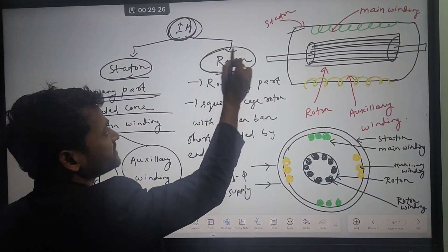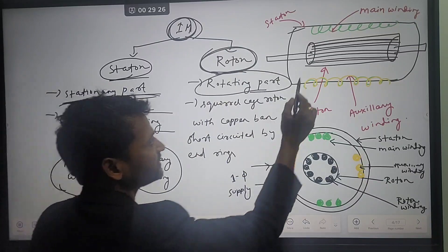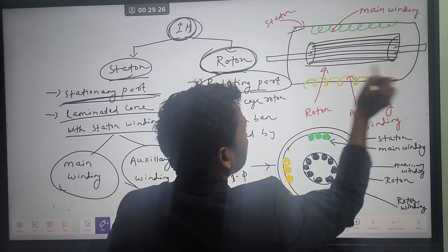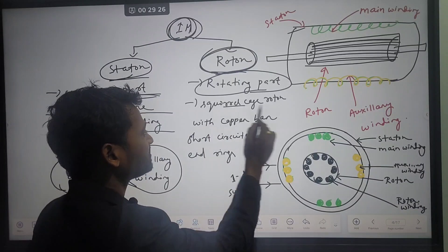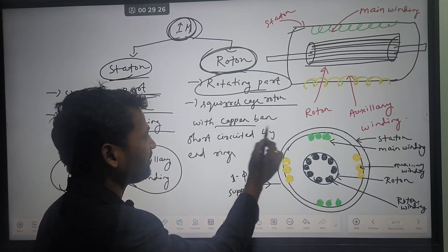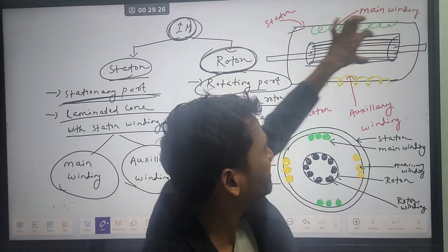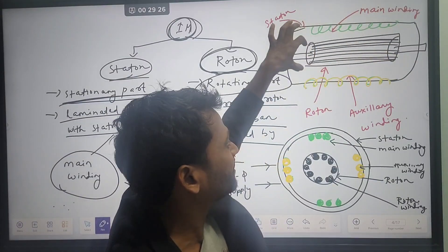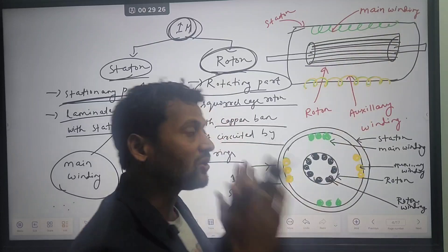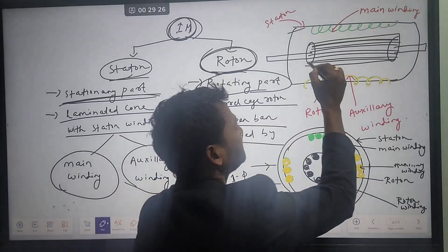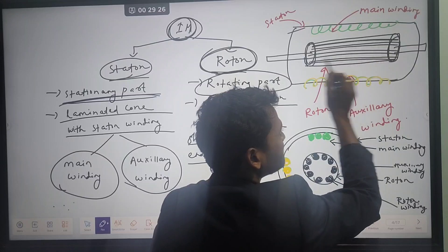The second part is the rotor. The rotor is the rotating part of the machine. It is basically a squirrel cage rotor with copper bars short-circuited by end rings. These are thick copper conductors, and on both sides they are short-circuited with end rings.